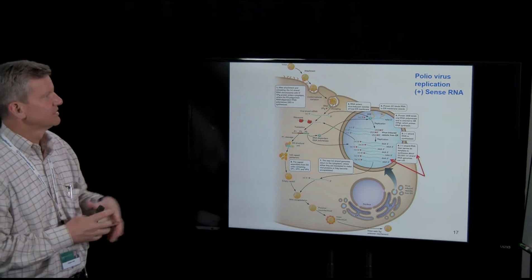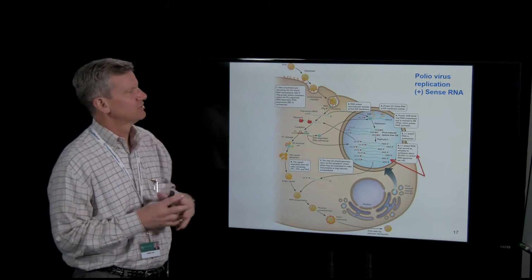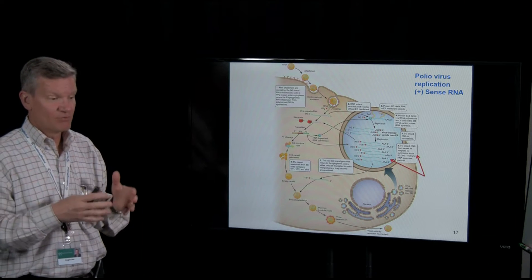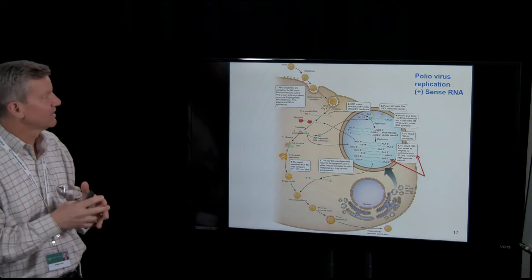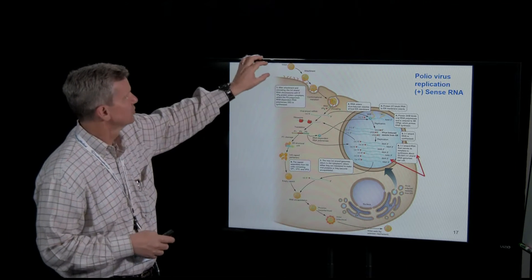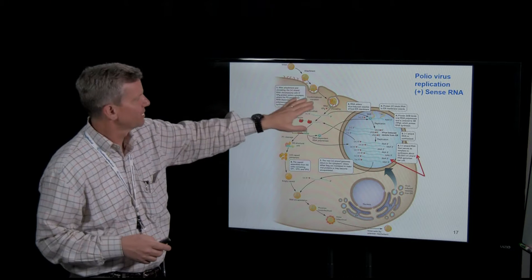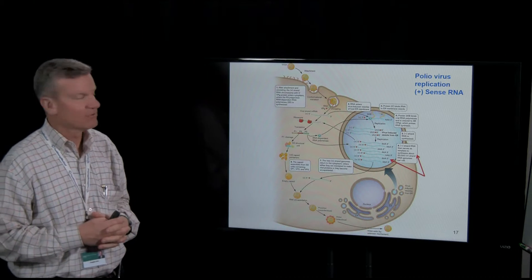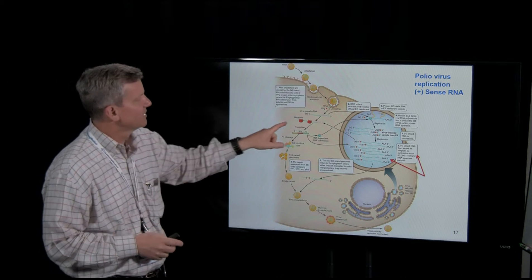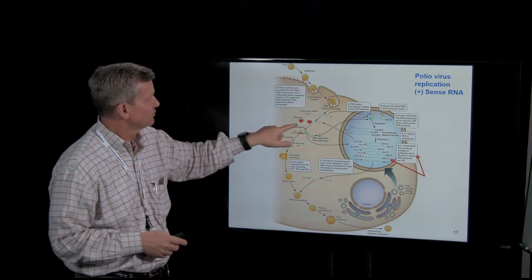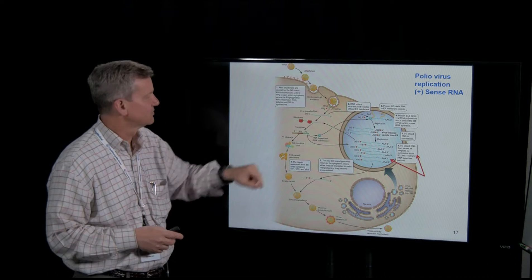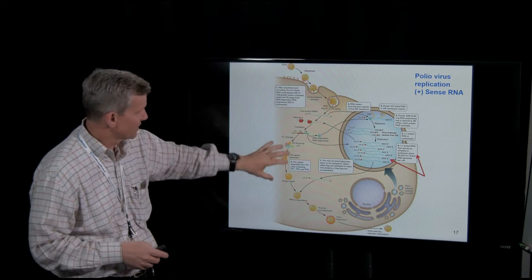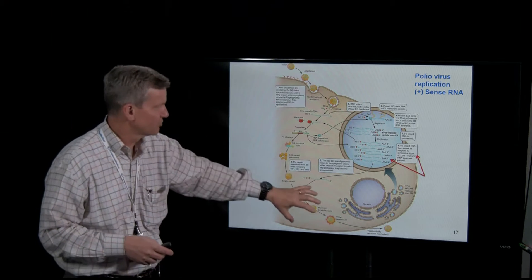This is poliovirus replication — positive sense RNA. Once again, the same replication strategy, but this slide shows classical attachment, penetration, and uncoating. We have a positive sense viral RNA, and then ribosomes hook up with this positive sense RNA — not using an IRES this time — but ribosomes are making proteins, making all these structural proteins.